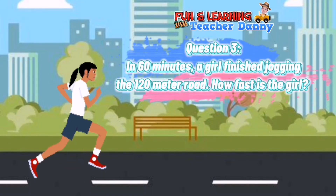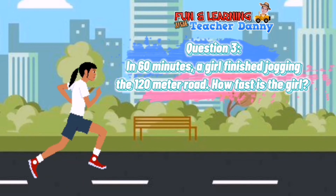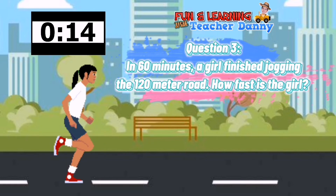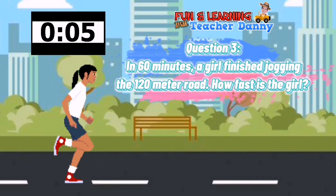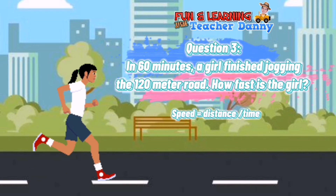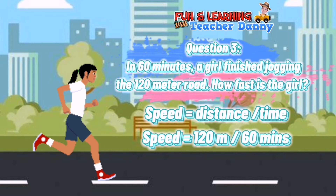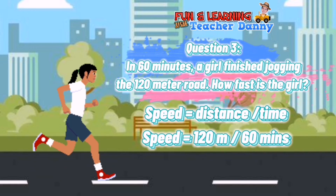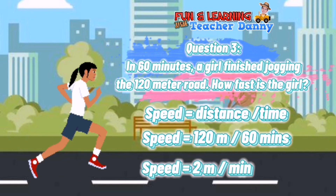And here is the last question. In 60 minutes, a girl finished jogging the 120 meter road. How fast is the girl? Remember, speed is equal to distance divided by time. The distance is 120 meters and the time is 60 minutes. 120 meters divided by 60 minutes equals 2 meters per minute. So our speed is 2 meters per minute.